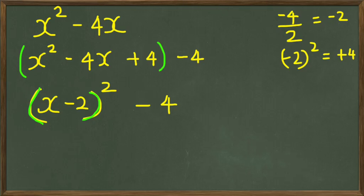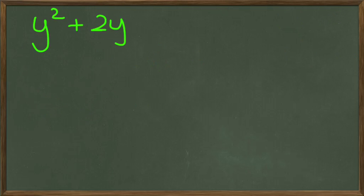Now, on to the y part. So with y, now we need to complete this equation here. Once again, the coefficient of y by itself is 2. So 2 divided by 2 is 1. 1 squared is 1.